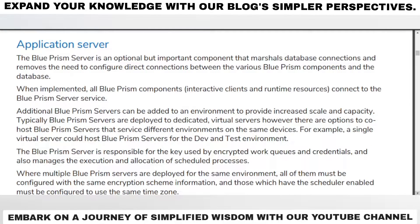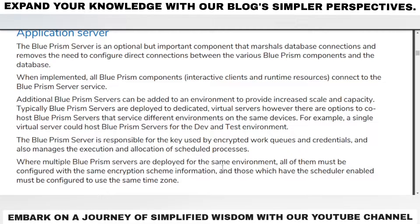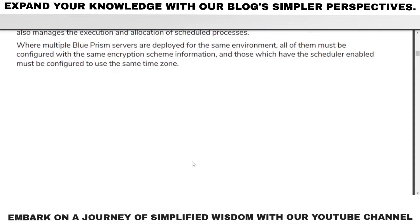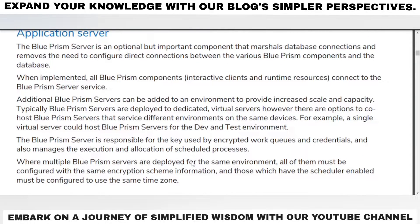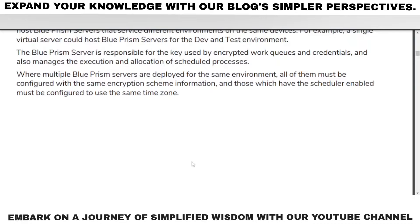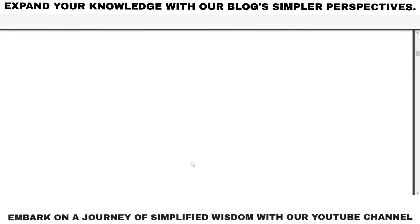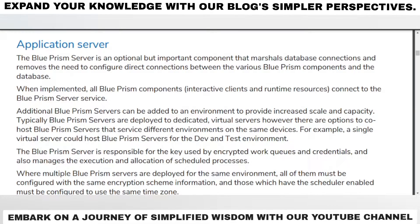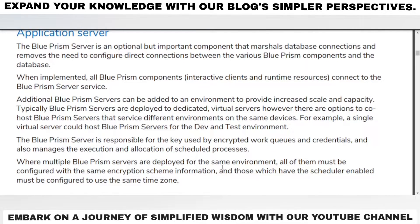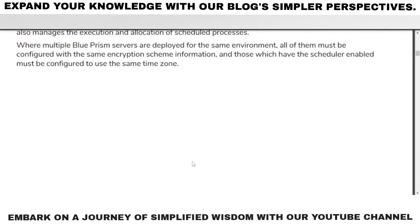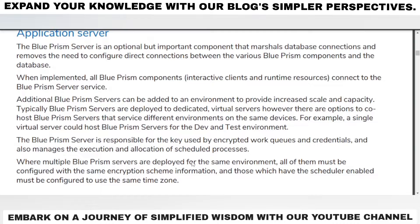We can use different app servers to divide our environments, data, or processes — creating a separate server for dev and test, and a separate server for production. If there are a lot of processes and a lot of data on only one server, it will become slow. By dividing it, the performance will be better. The Blue Prism server is also responsible for the encryption key used for queues and credentials, and manages the execution and allocation of scheduled processes. Where multiple Blue Prism servers are deployed for the same environment, all must be configured with the same encryption scheme, and those with the scheduler enabled must use the same time zone.